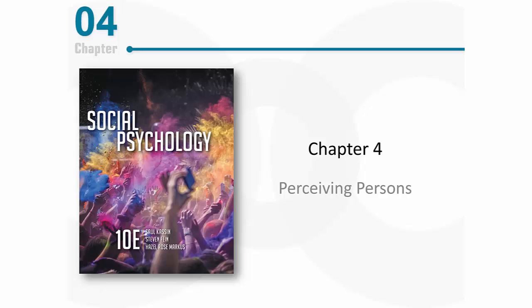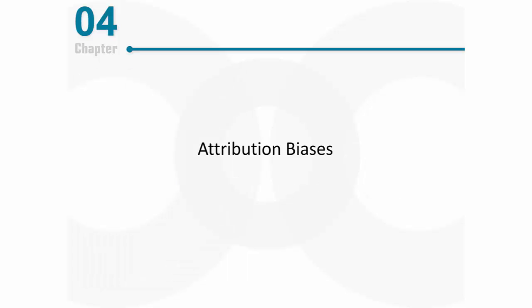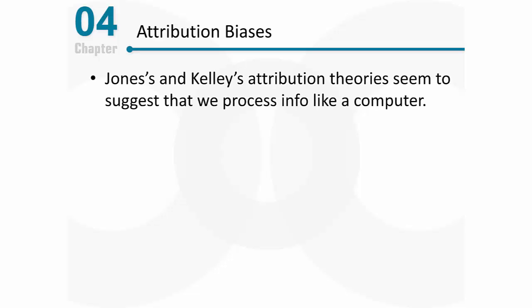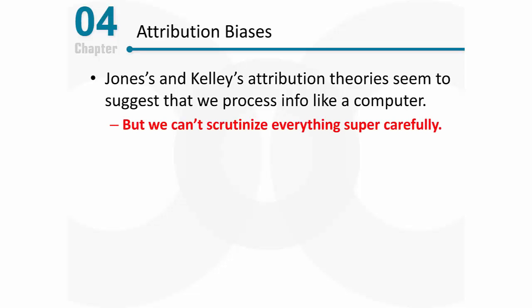Let's continue talking about how we perceive other people, but this time let's talk about attributional biases. In a previous video, we were talking about Jones's and Kelly's attribution theories, and those theories really seem to suggest that we process social information like a computer would, very carefully scrutinizing every little piece of information. But in reality, we can't scrutinize every piece of information very carefully.